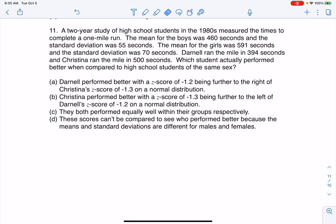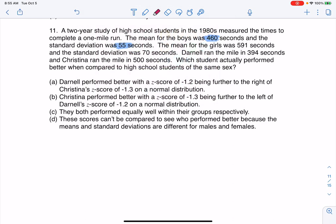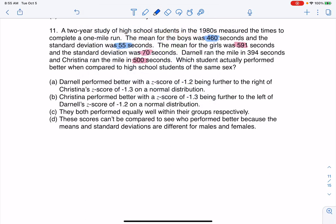So let's go ahead and break this down. We've got some numbers for boys and girls. The mean for the boys was 460 and its standard deviation was 55. And the mean for the girls was 591 and 70. Christina came in at 500 and Darnell went in 394.